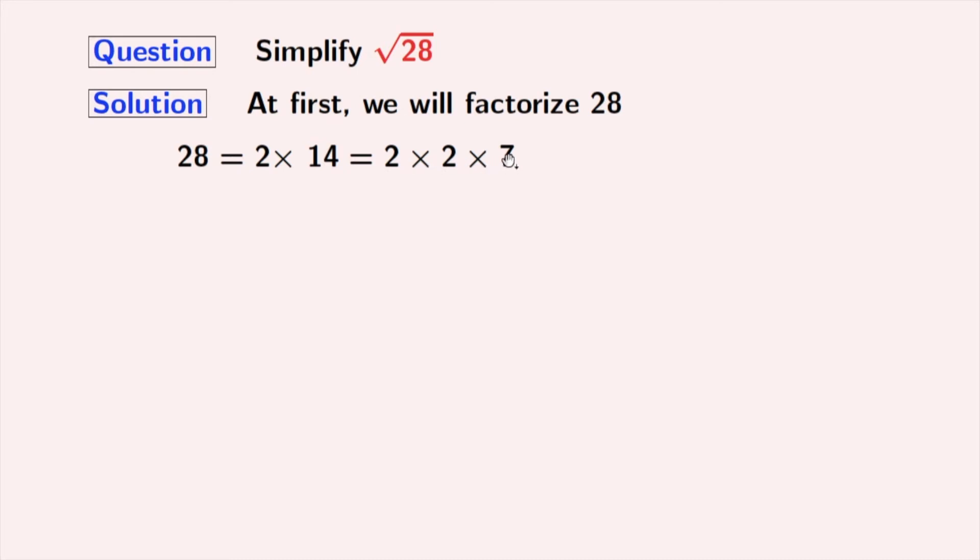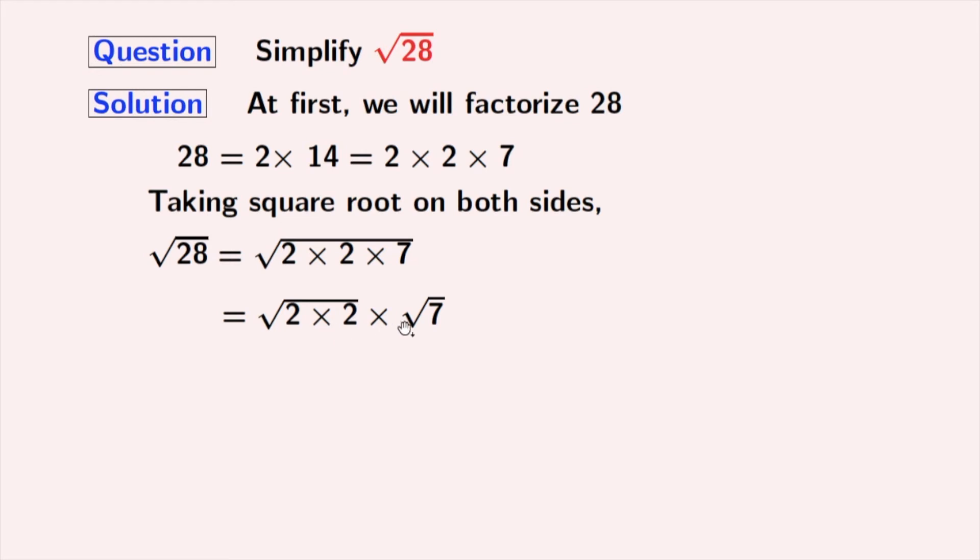Now we will take square root on both sides. Doing that, we get square root of 28 is equal to square root of 2 times 2 times 7. Now we will use grouping here and we get square root of 2 times 2 times square root of 7.